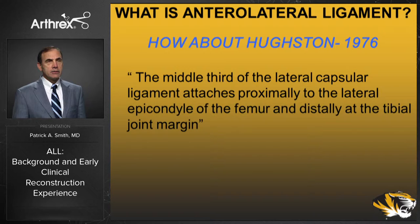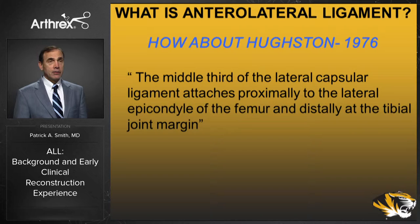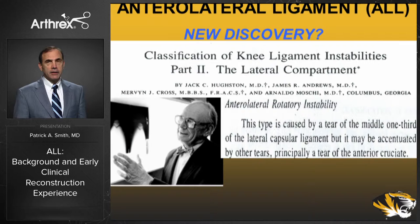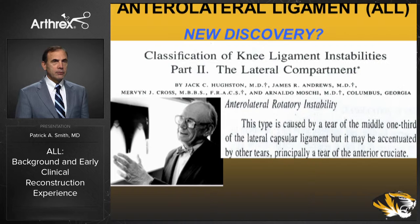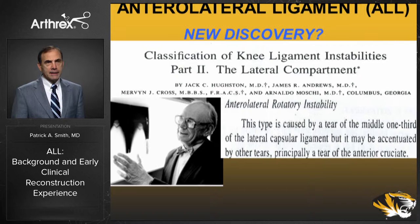Dr. Houston in 1976 wrote that the middle third of the lateral capsular ligament attaches proximally to the lateral condyle of the femur and distally at the tibial joint margin — very similar to what Dr. Stephen Kleiss described. In his landmark JBJS article on classification of knee ligament instabilities, Houston described anterolateral rotatory instability caused by a tear of the middle one-third of the lateral capsular ligament, potentially accentuated by an ACL tear. So Dr. Houston back in 1976 already established the relationship of lateral capsular injury with ACL tears.